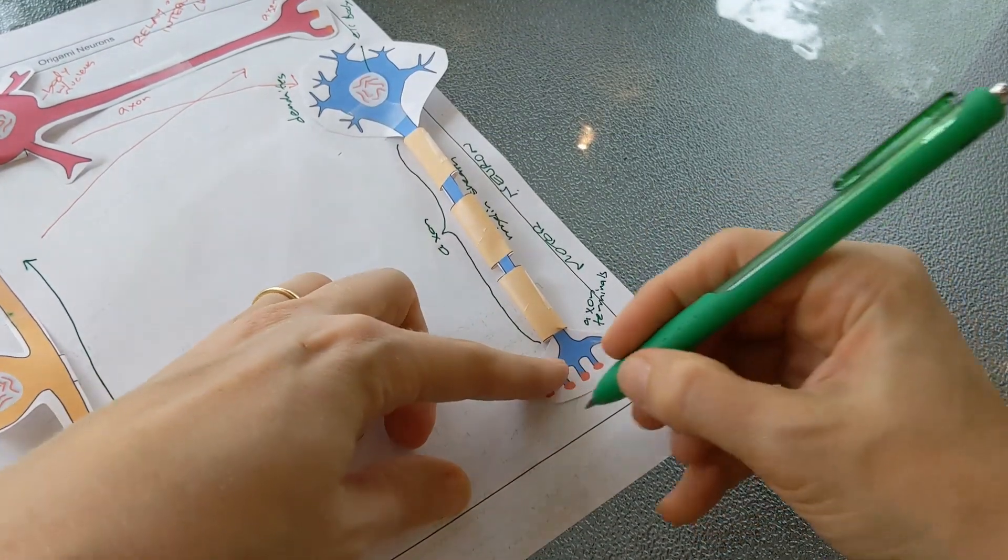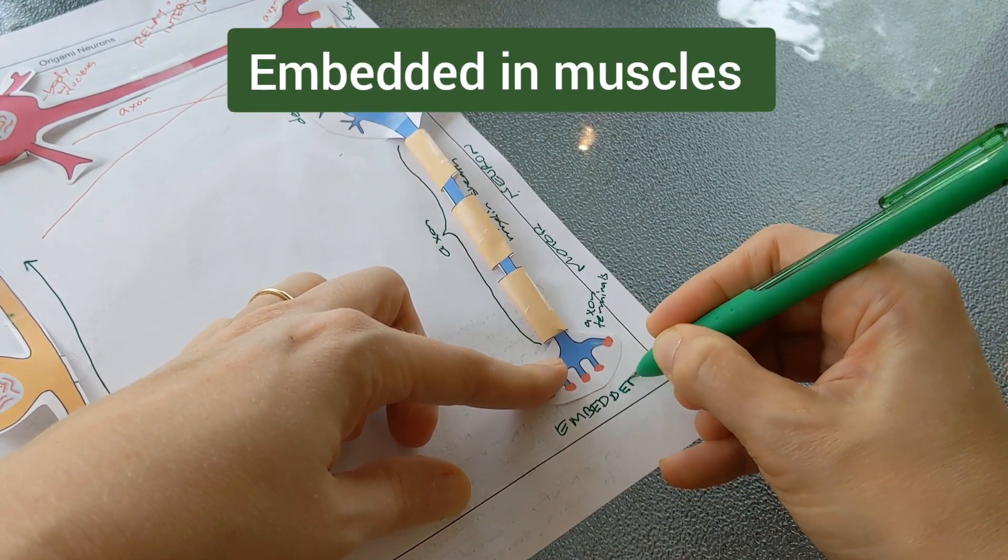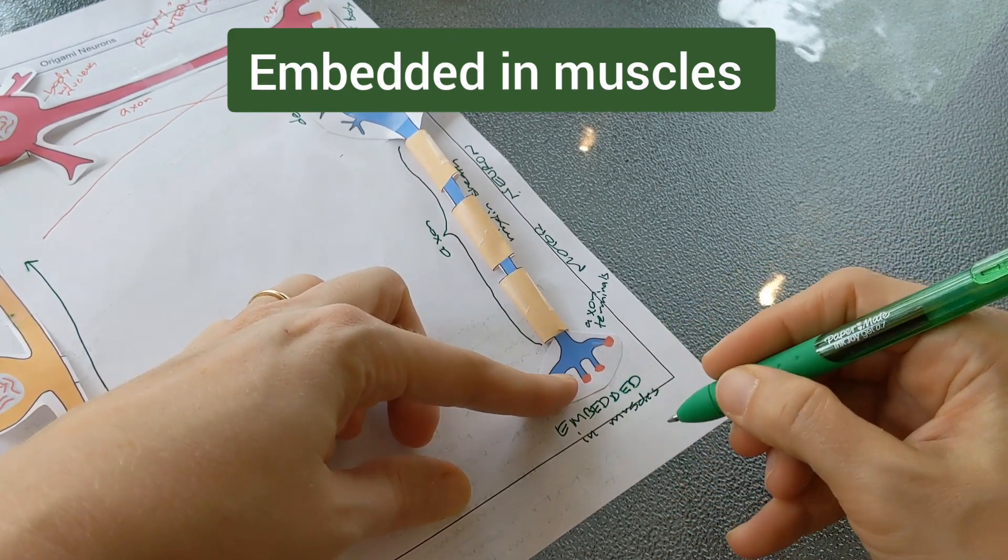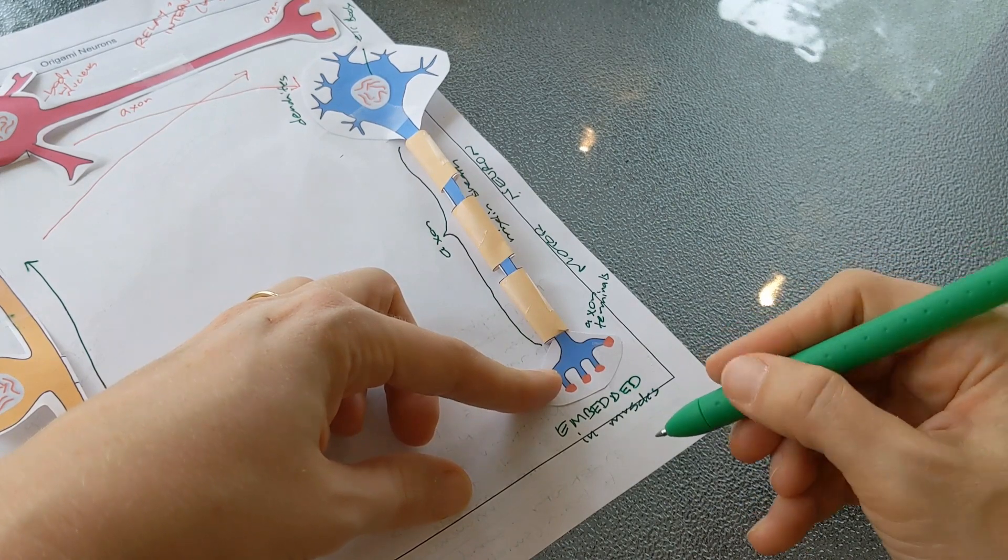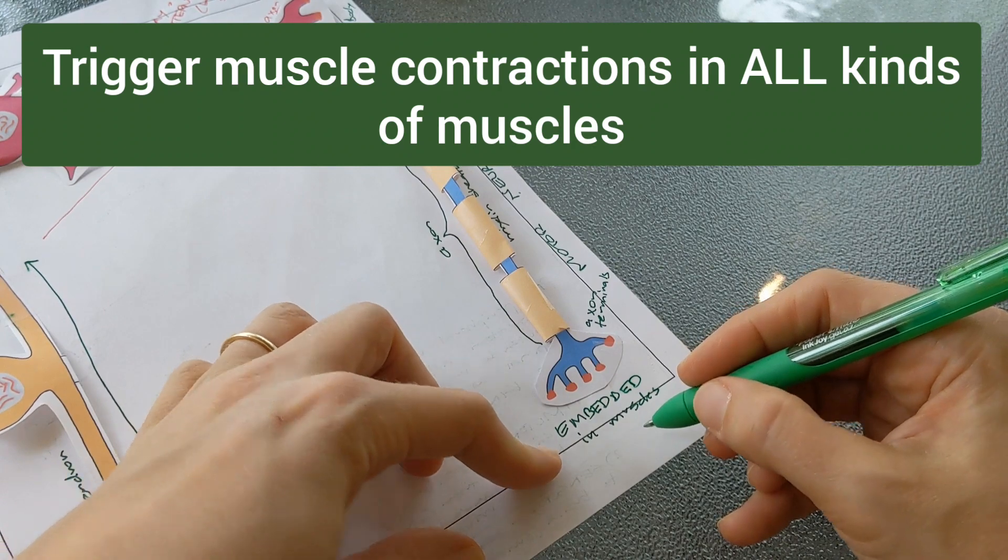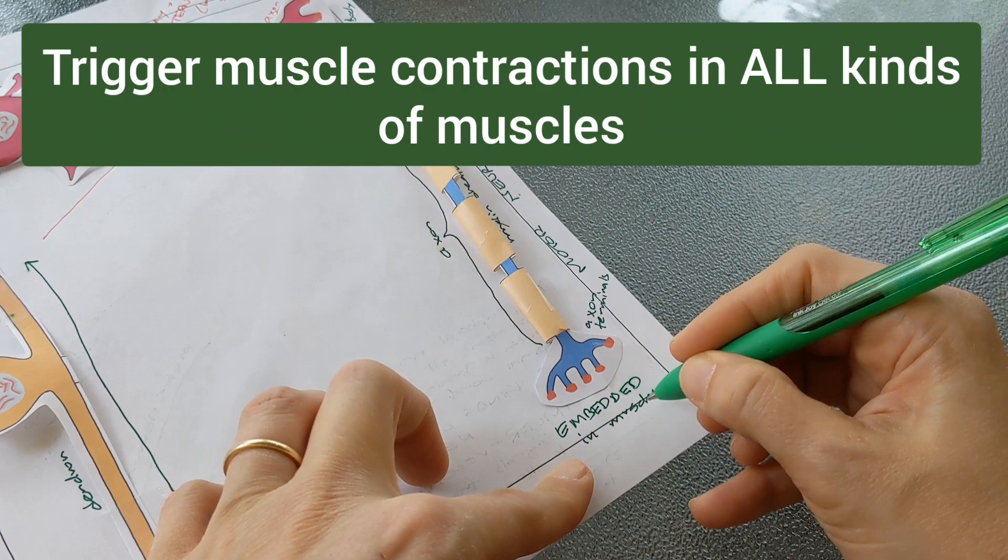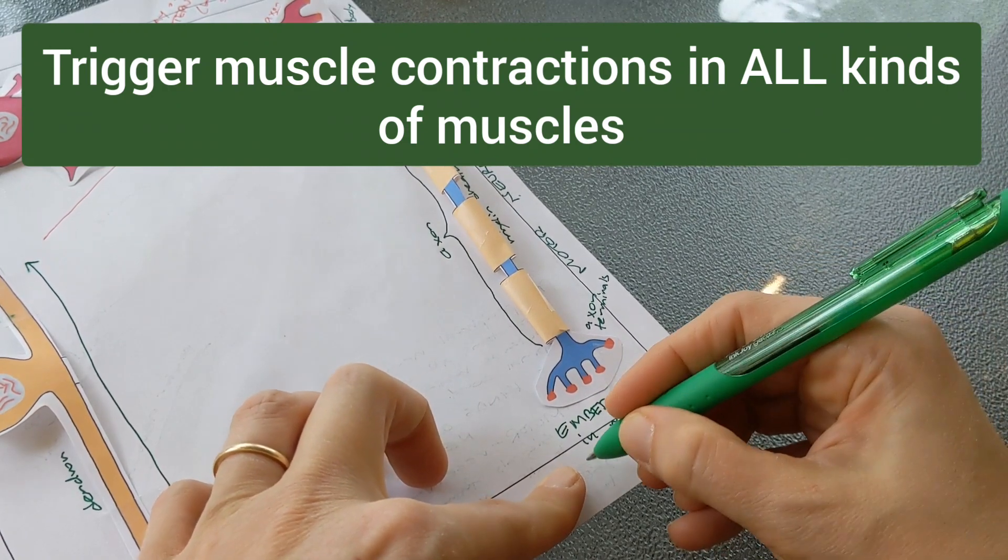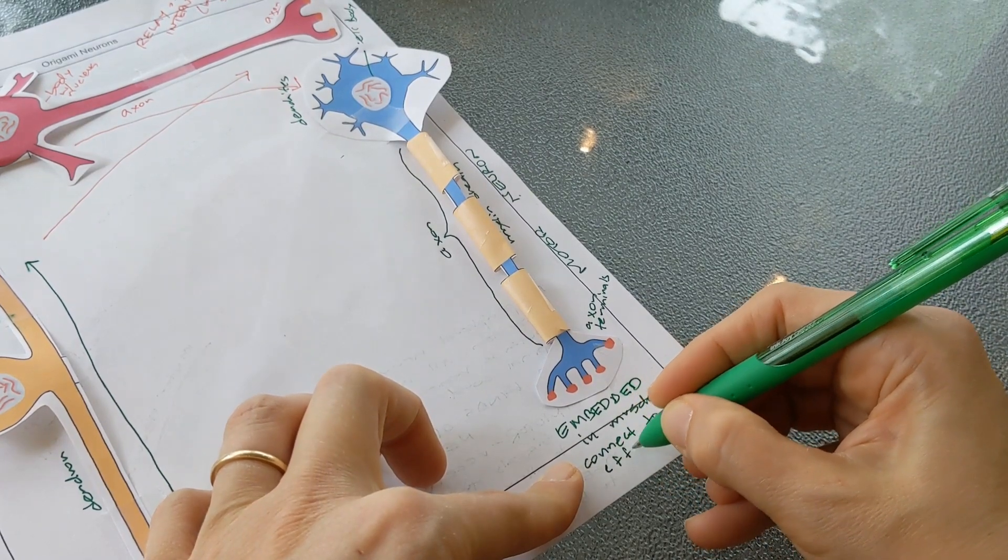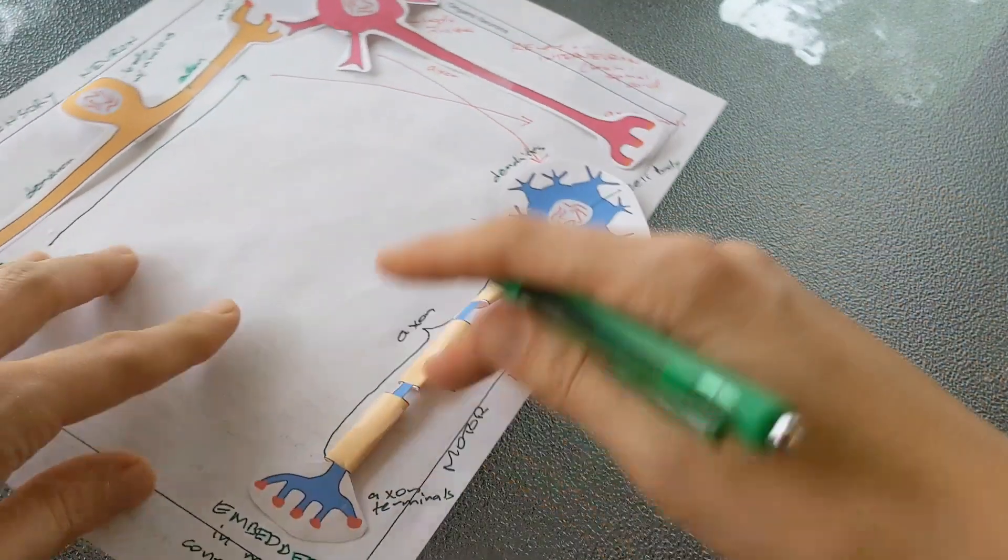But these are embedded in muscles. Now these might be the muscles of your arms and legs, that might be what you think of, but also things like the heart muscle is controlled by motor neurons, and the muscles that help move your food through your intestines and through your stomach, those all have motor neurons embedded in them too. So these are embedded in muscles and they connect to effector cells and they receive the signals that allow our muscles to move.